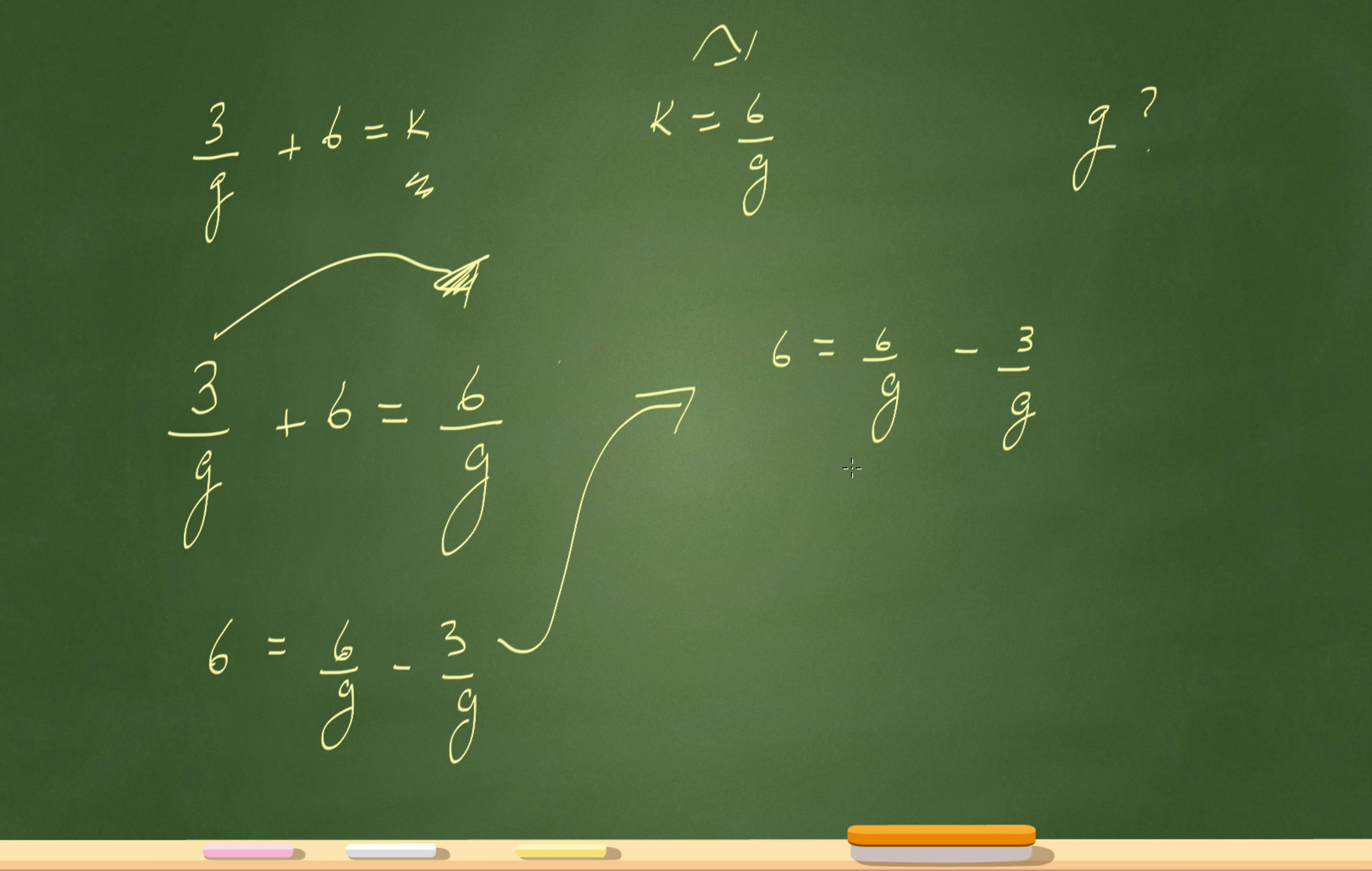Now think about how we subtract all our fractions. If I have the same denominator, a common denominator, I can just subtract my numerators. So over here this will just become 6 minus 3, which is 3, so 3 over g.